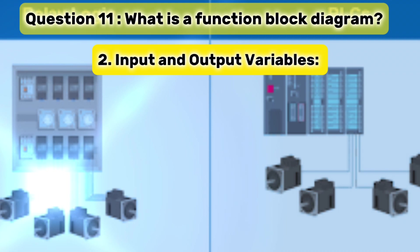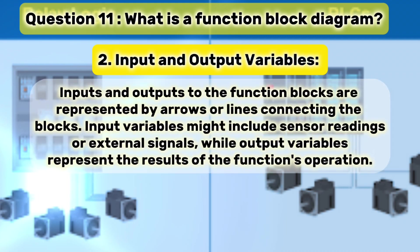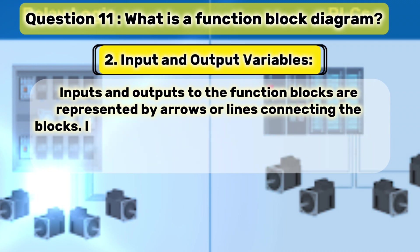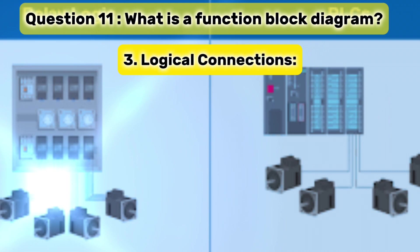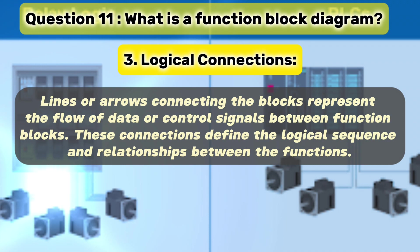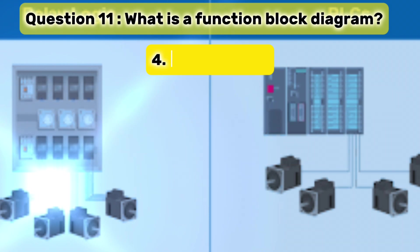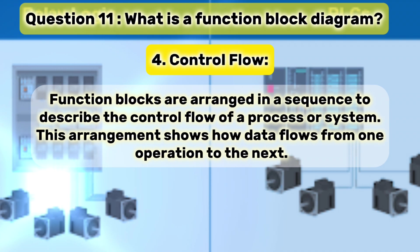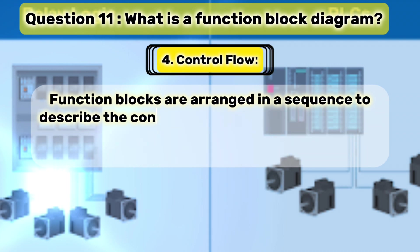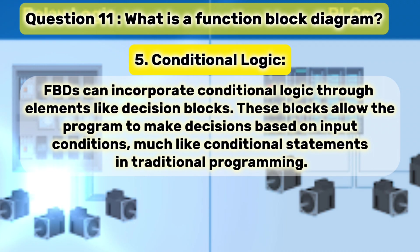2. Input and output variables: inputs and outputs to the function blocks are represented by arrows or lines connecting the blocks. Input variables might include sensor readings or external signals, while output variables represent the results of the function's operation. 3. Logical connections: lines or arrows connecting the blocks represent the flow of data or control signals between function blocks. These connections define the logical sequence and relationships between the functions. 4. Control flow: function blocks are arranged in a sequence to describe the control flow of a process or system, showing how data flows from one operation to the next. 5. Conditional logic: FBDs can incorporate conditional logic through elements like decision blocks. These blocks allow the program to make decisions based on input conditions.